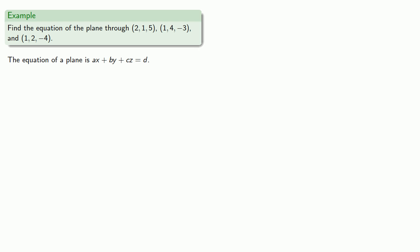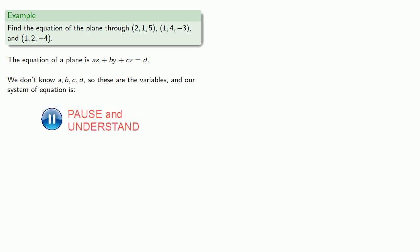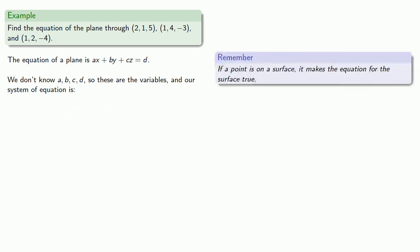So the equation of a plane is ax plus by plus cz equals d. Now, the important thing to remember is we don't know a, b, c, or d. So these are our variables. And we can solve for them by setting up a system of equations. So first remember, if a point is on a surface, it makes the equation for the surface true. And since 2, 1, 5 is on the plane, then if I let x equals 2, y equals 1, z equals 5, I should get a true statement.